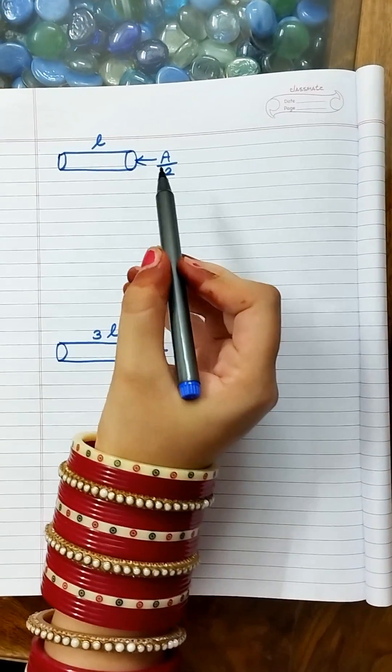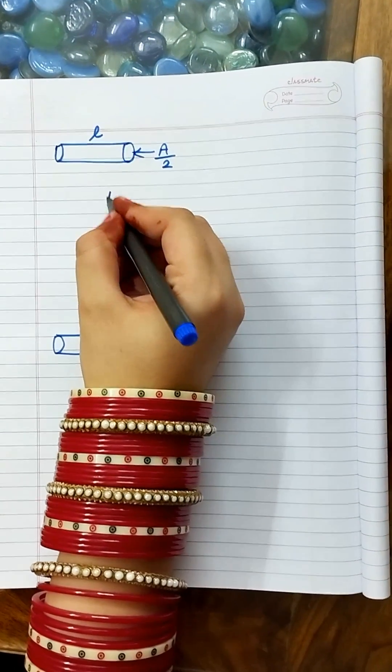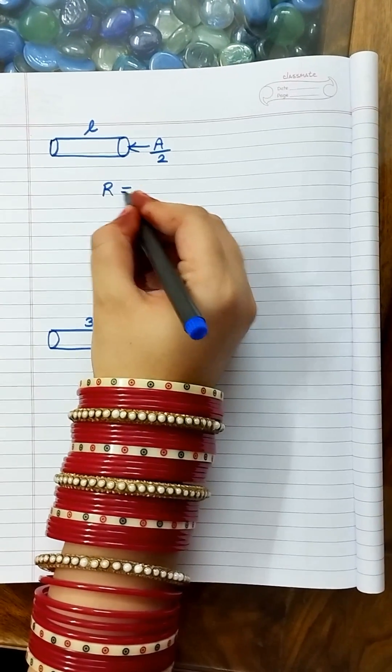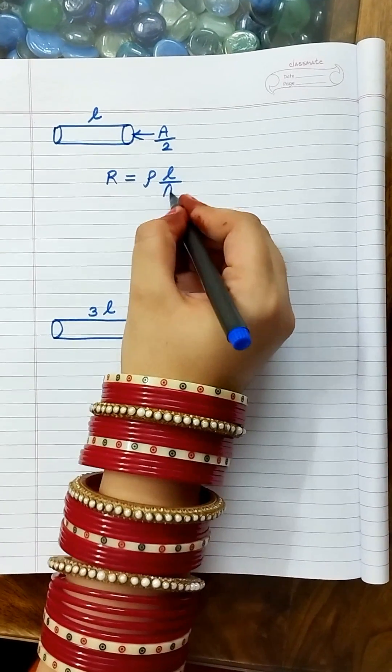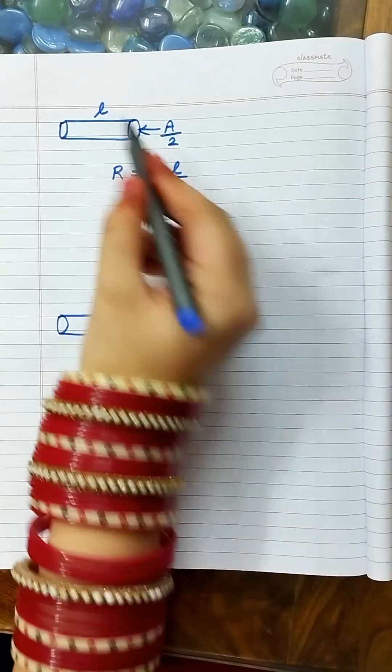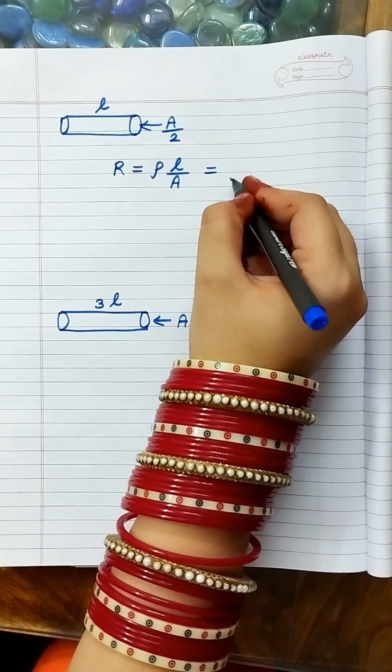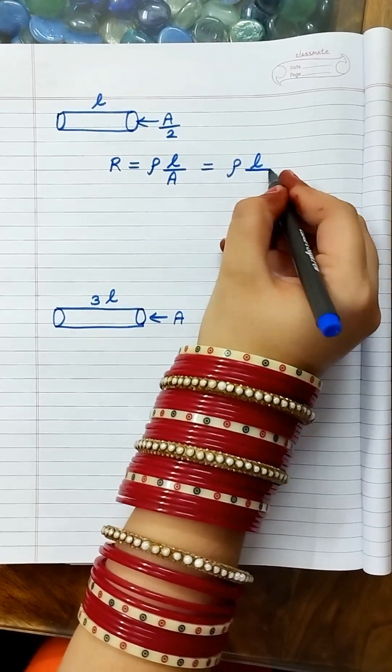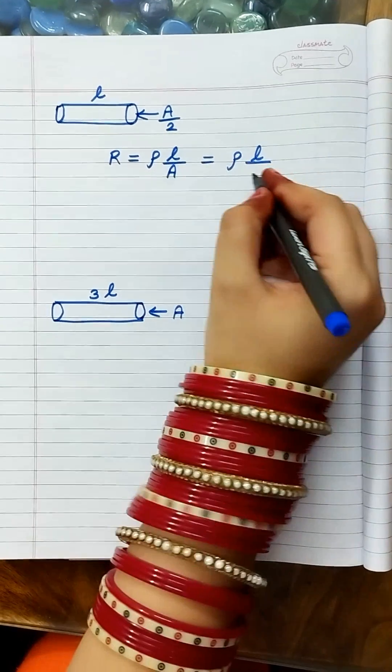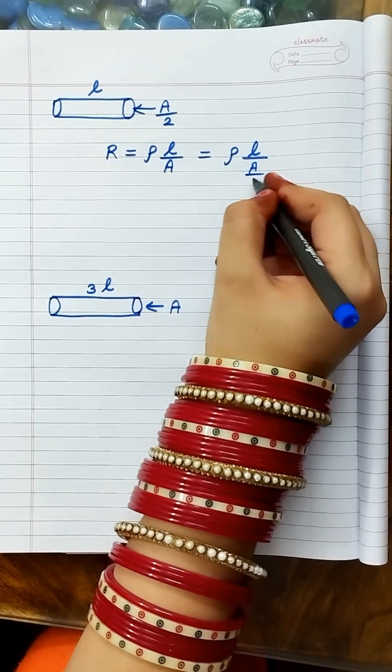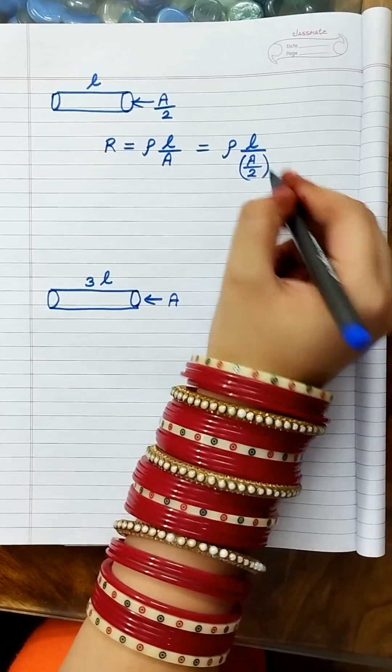When we calculate the resistance, we will use R equals ρL/A. Here the length is L, so we will use this as is. But the area is A/2, so I will write in the denominator A/2.